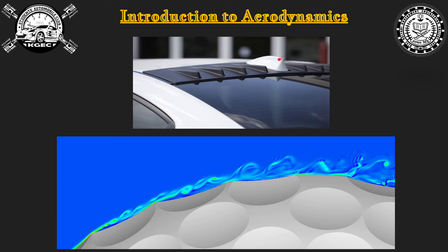Vortex generators create small turbulence, and that turbulent air delays flow separation. You don't want flow to separate, as that creates high pressure drag. So vortex generators create turbulence, delay flow separation, and thereby reduce pressure drag.